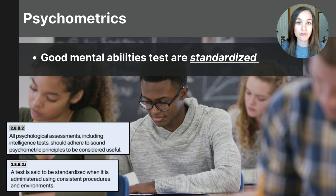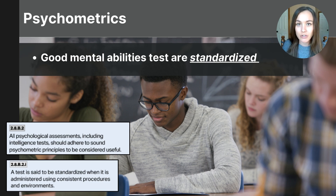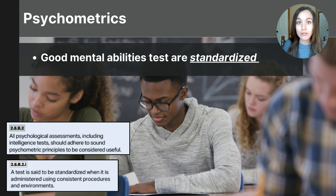This video lesson is titled Psychometrics. Let's start by defining that word. We can break it down into its roots: 'psych' or 'psycho' refers to the mind, and 'metrics' refers to measurements. So psychometrics is an area of psychology that focuses on psychological testing. In psychology we can assess many different types of mental abilities — we can test cognitive factors like intelligence.